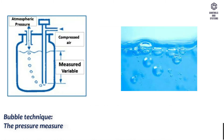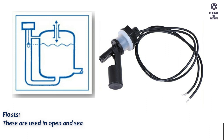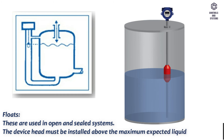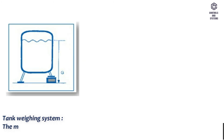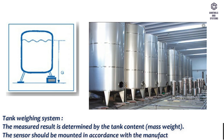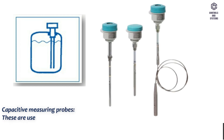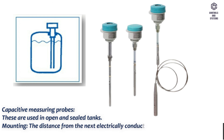For the bubble technique, the pressure measurement is determined by the height of the liquid above the bubble tube outlet. Floats are used in open and sealed systems; the device head must be installed above the maximum expected liquid level. For tank weighing systems, the measured result is determined by the tank content mass and weight, and the sensor should be mounted in accordance with the manufacturer's instructions. Capacitive measuring probes are used in open and sealed tanks; the distance from the next electrically conductive component must be as specified by the manufacturer.